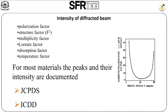From the intensity of diffracted beams, what can we predict? The factors to consider are: the polarization factor, structure factor, multiplicity factor, Lorentz factor, absorption factor, and temperature factor. These are the factors that help find out the structure of crystalline samples.